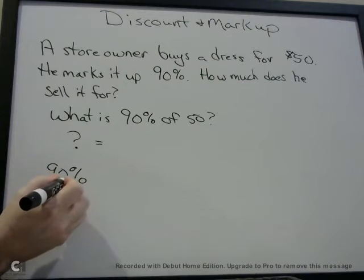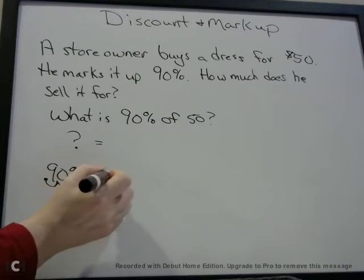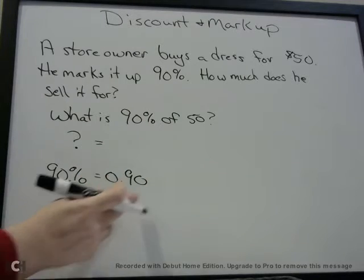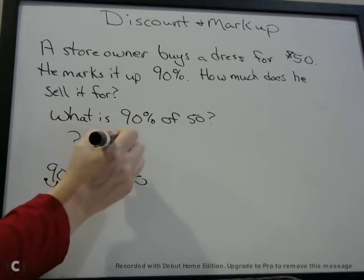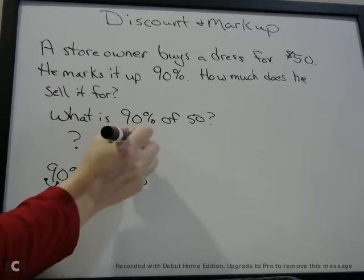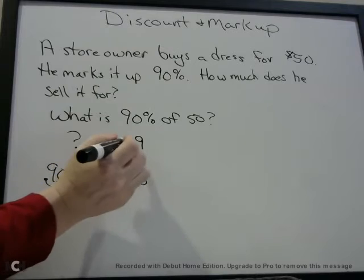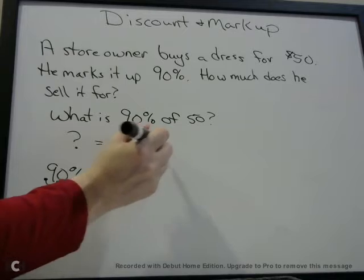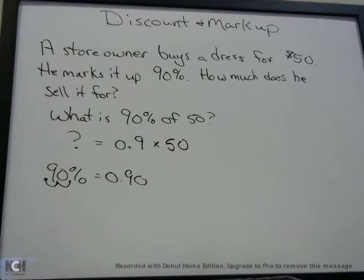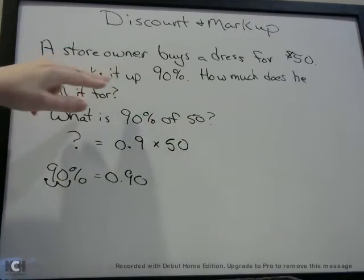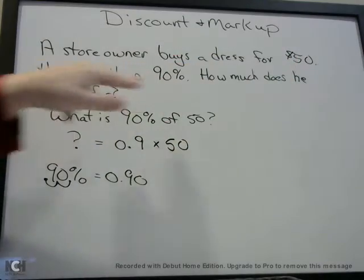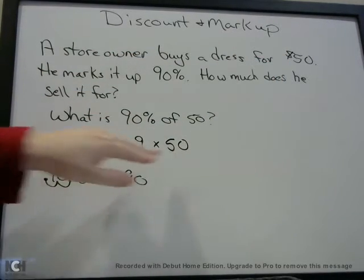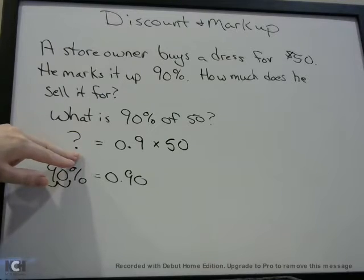To convert 90% to a decimal, move the decimal point two places to the left — one, two — so 90% is 0.9. 'Of' means times, so we're going to multiply by 50. What is 90% of 50? Multiply 0.9 times 50 and that gives you your answer.